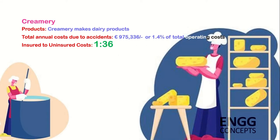The second case study is a creamery. A creamery which makes dairy products had a total staff of 340 members. The total annual cost due to accidents was about 975,000 euros, equaling 1.4 percent of total operating costs. When comparing insured and uninsured costs of accidents, the ratio was 1 to 36 — a massive difference.